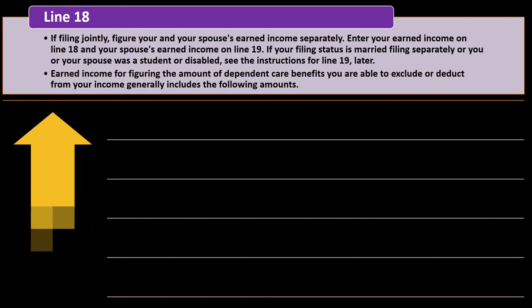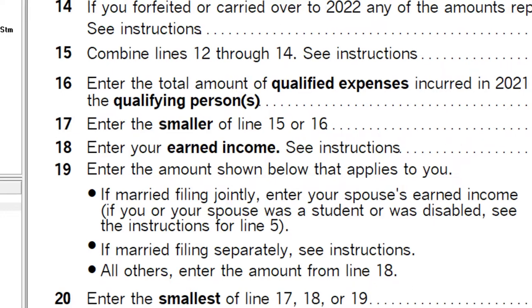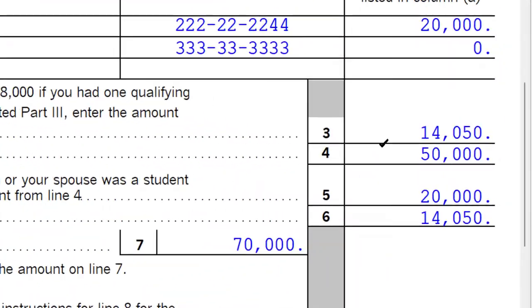Lines 18 and 19 address earned income. If filing jointly, figure your and your spouse's earned income separately. Enter your earned income on line 18 and your spouse's earned income on line 19. If your filing status is married filing separately, or your spouse was a student or disabled, see the instructions for line 19. Line 19 says: if married filing jointly, enter your spouse's earned income; all others enter the amount from line 18.